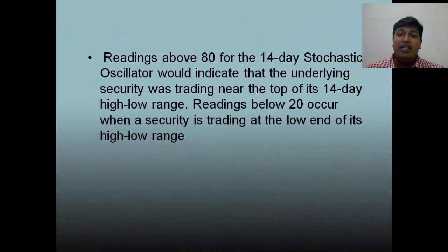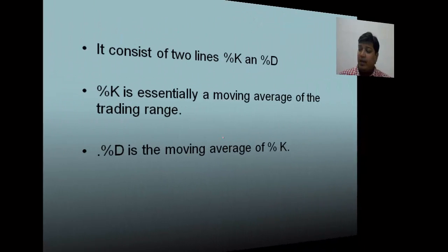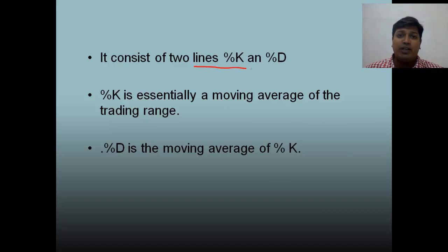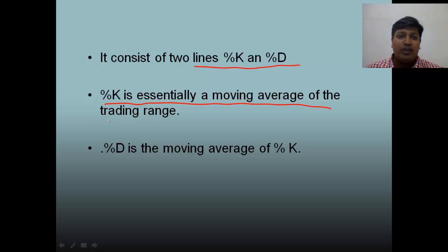A reading above 80 for the 14-day stochastic oscillator indicates that the underlying security is trading near the top of its 14-day high-low range. A reading below 20 occurs when a security is trading at the low end of its high-low range. The indicator consists of two lines: %K, which is essentially the moving average of the trading range, and %D, which is the moving average of %K.